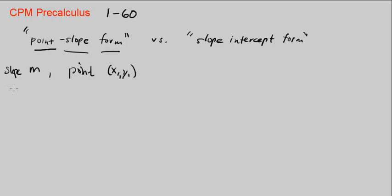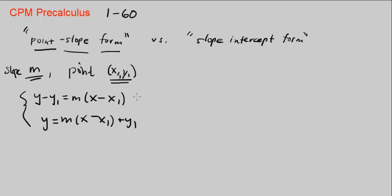And you're told a line has the slope M and it passes through this point. And then it has the form Y minus Y1 equals M times X minus X1. Or if you add Y1 to both sides, you have the form Y equals M times X minus X1 plus Y1. So these are both called the point-slope form of a line.